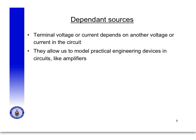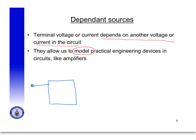With a dependent source, the terminal voltage or current depends on another voltage or current in the circuit. This allows us to model some practical engineering devices like, for example, amplifiers. You've hopefully all been in the lab where you're building your audio amplifier.